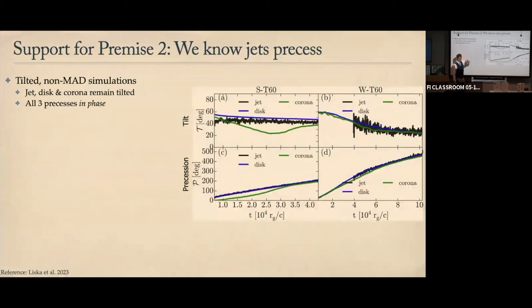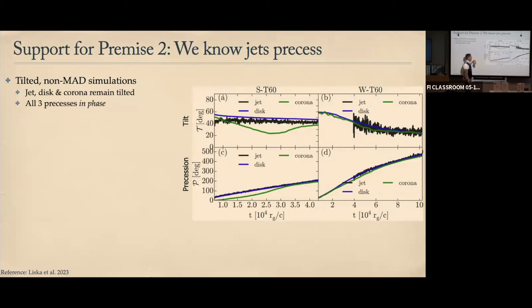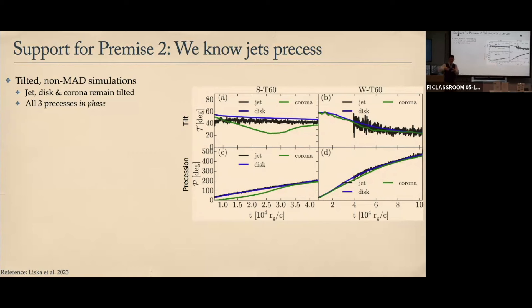Simulations by Matthew Liska of tilted accretion disks show that the jet, disk, and corona all precess together. Looking at tilt and precession angle for two different simulations, the takeaway is that basically all three components precess together. This picture of a disk, hot thick flow or corona, and jet precessing together seems consistent with these simulations and explains the observations quite nicely.